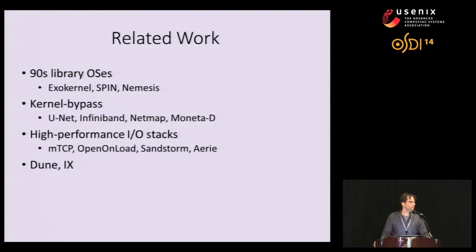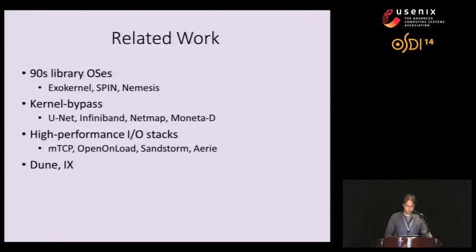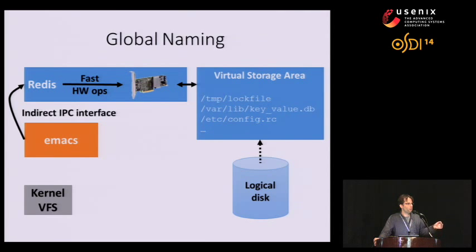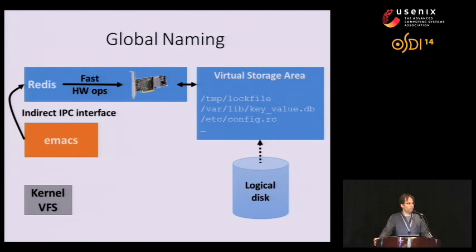Q: From Jeff Kenning, Harvey Mudd College: When mediating disk I/O through Redis, that requires Redis to be running. What happens if the config file is corrupted so badly that Redis refuses to run? A: This indirection interface is really provided by the library I/O stack that runs inside Redis. You could fire up a small server containing nothing but that library I/O stack, which exports the interface, and then you're still able to access the configuration file via that server.